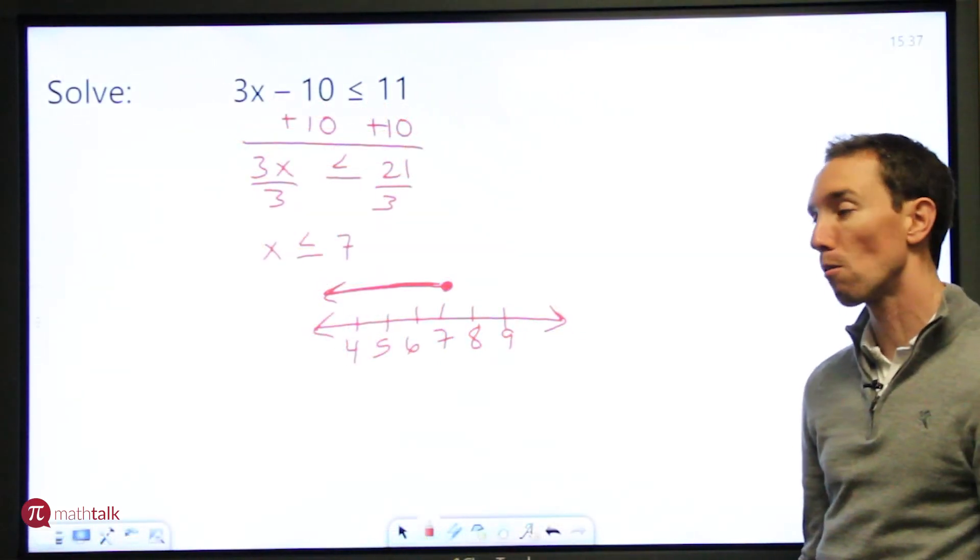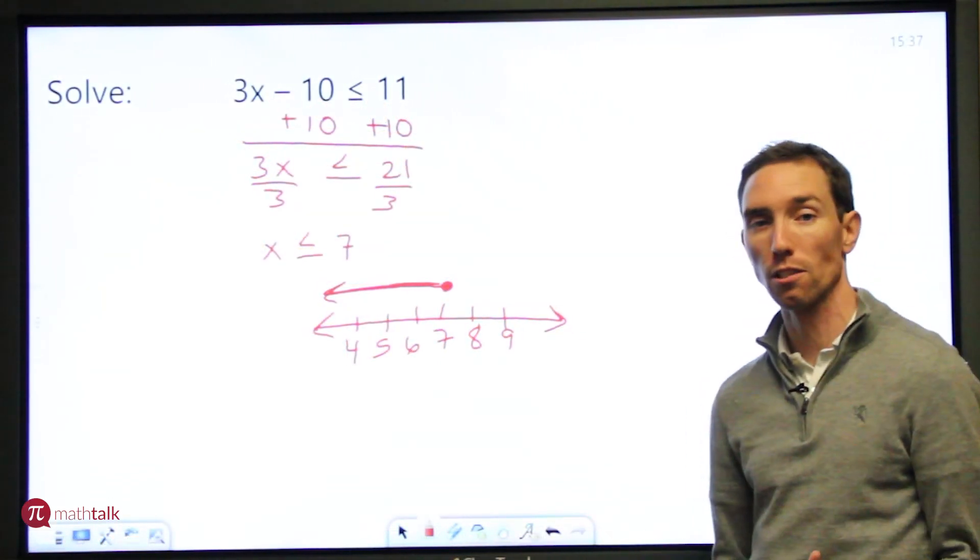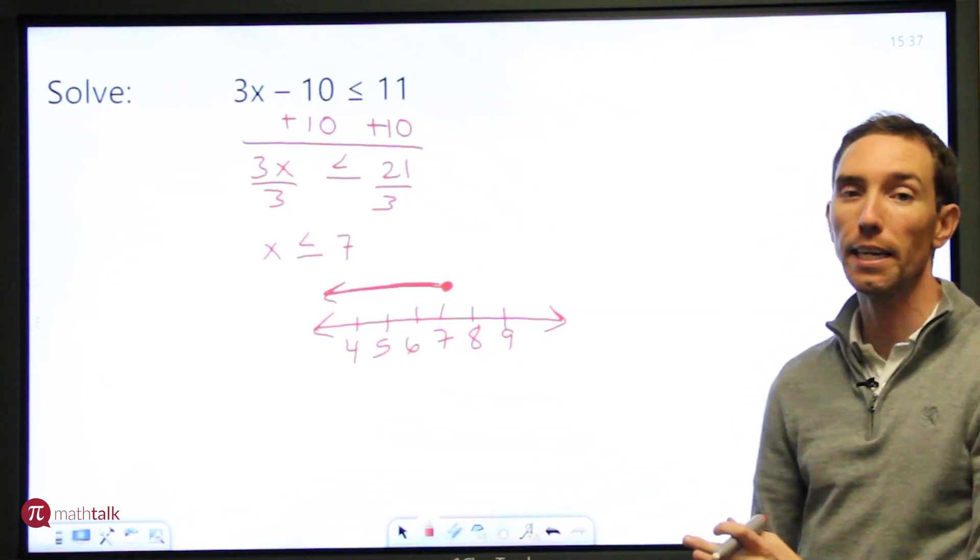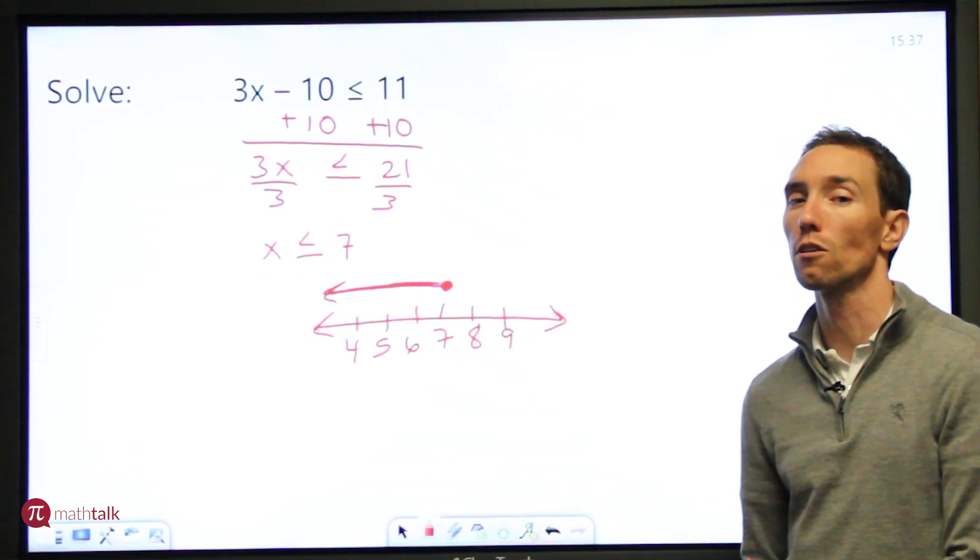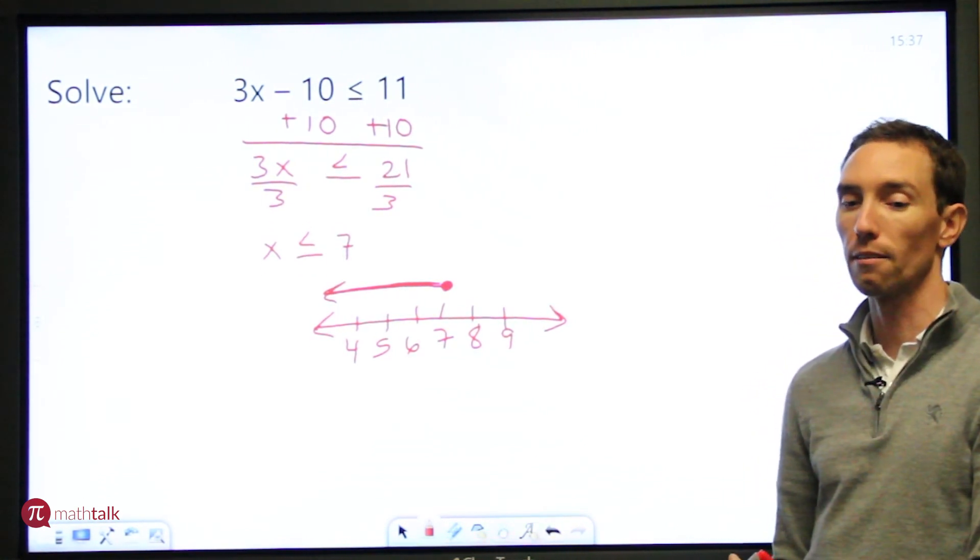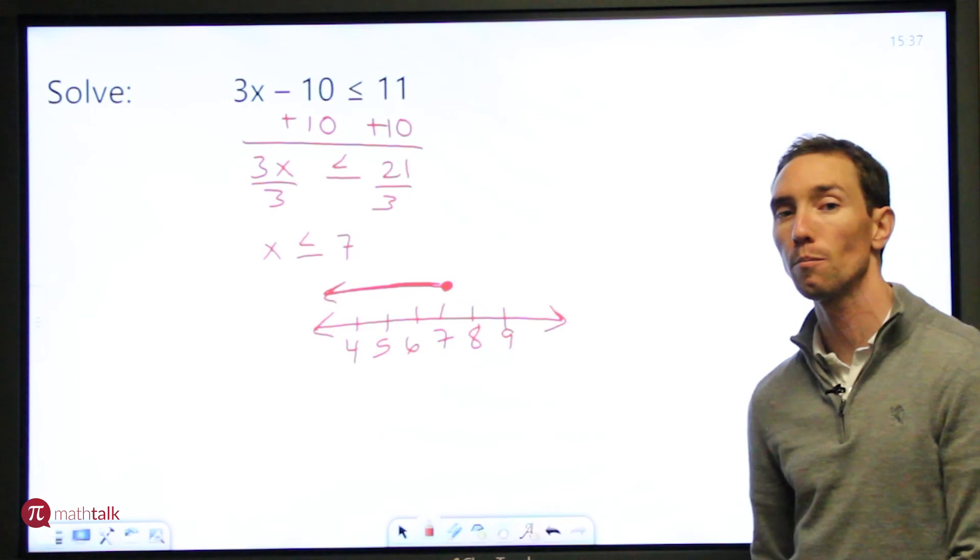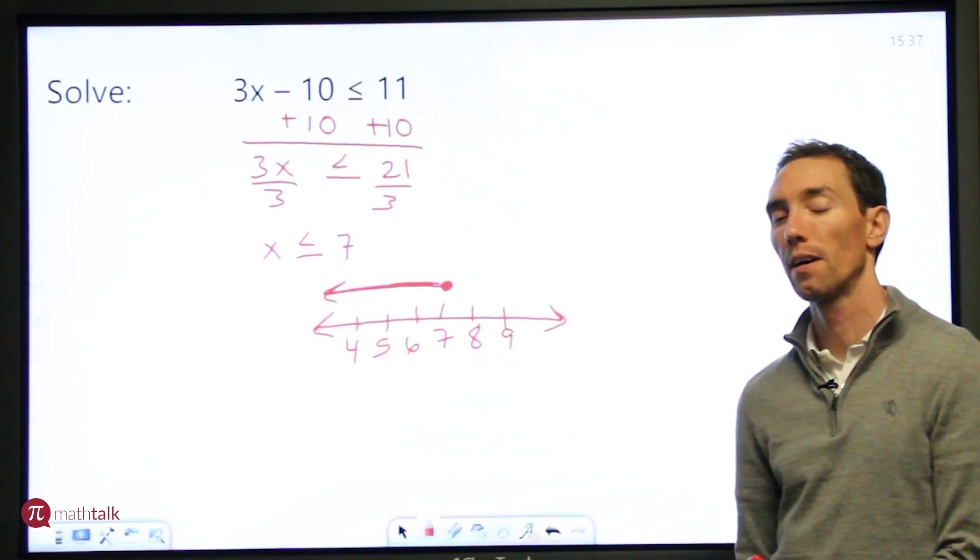So I hope that when you get to solving inequalities, you remember that it's solved just like an equation, except instead of an equal sign, you have an inequality. If you have a less than or a greater than symbol, you use an open circle. If you have a less than or equal to or greater than or equal to symbol, you use a closed circle. So I hope that helps.